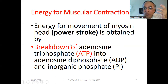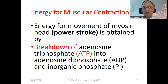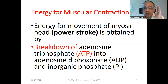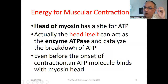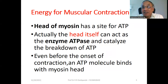This power stroke is obtained through the breakdown of adenosine triphosphate. ATP is the energy molecule — it breaks down into adenosine diphosphate (ADP) and inorganic phosphate (Pi), releasing energy. The head of the myosin has a special site for ATP molecules, and it itself acts as the enzyme ATPase, which catalyzes the breakdown of ATP and provides support for the contraction process.